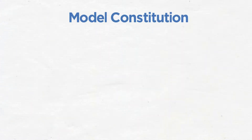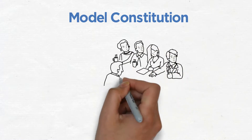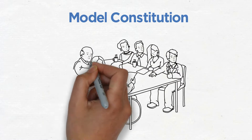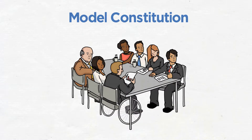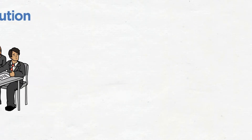Following the Local Government Act 2000, which changed the way councils made decisions, the Government issued a Model Constitution, which was adopted by the Council and created the leader and cabinet system of decision making. Since that time, there have been many amendments to reflect changes in legislation, case law, decisions made by the courts, and good practice.